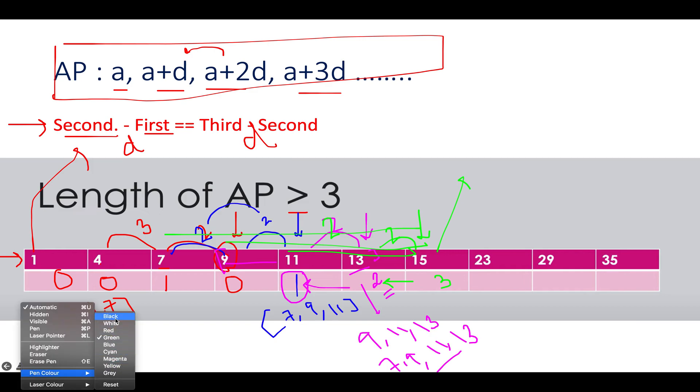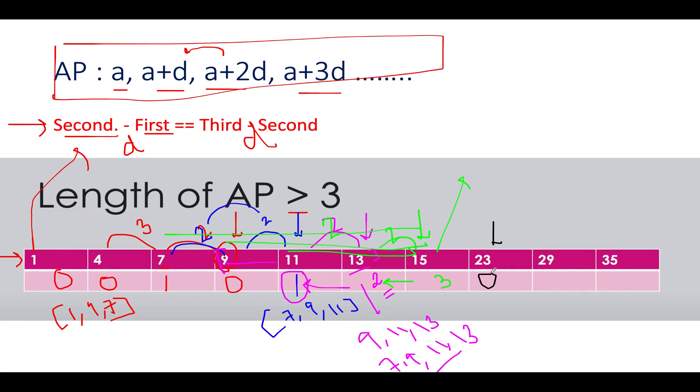Next we see 23. Are they forming an AP? 23 minus 15 is 8, 15 minus 13 is 2. Not forming an AP, so the value becomes 0. Next we have 29: 29 minus 23 is 6, 23 minus 15 is 8. Not forming an AP, we'll skip it. We have 35: 35 minus 29 is 6, 29 minus 23 is again 6. We found one possibility for an AP progression, we'll update the answer to 1.